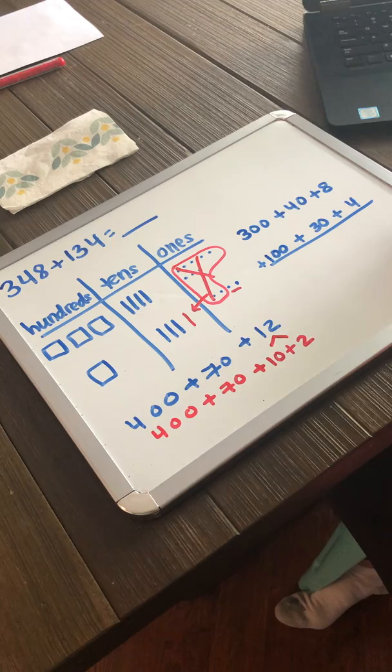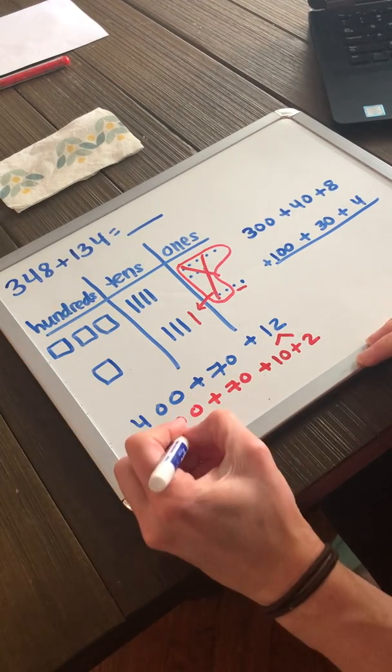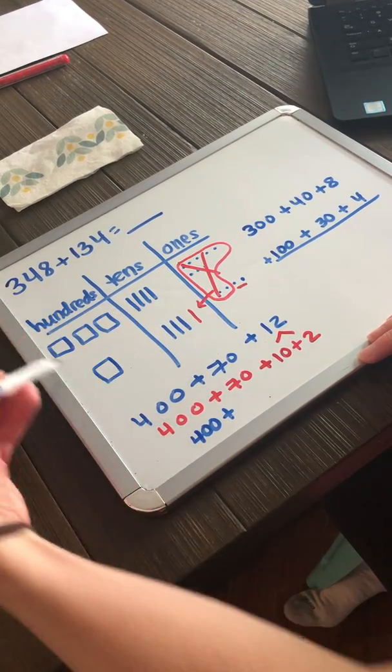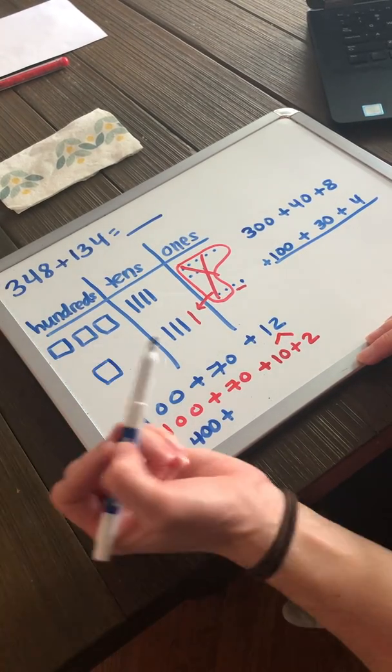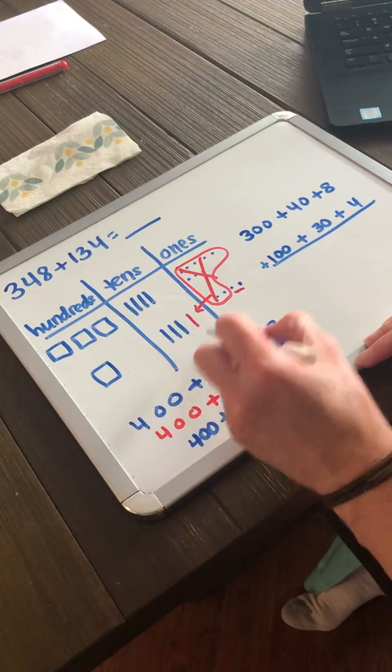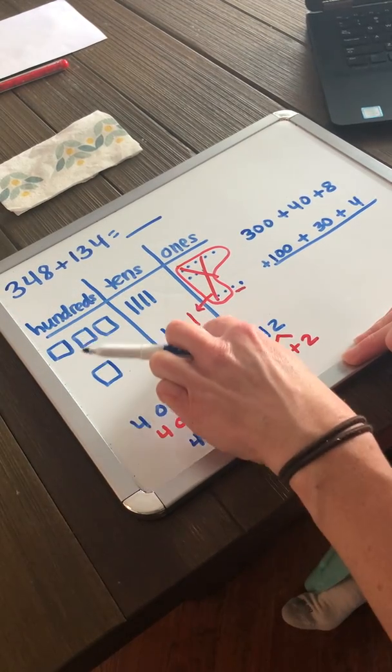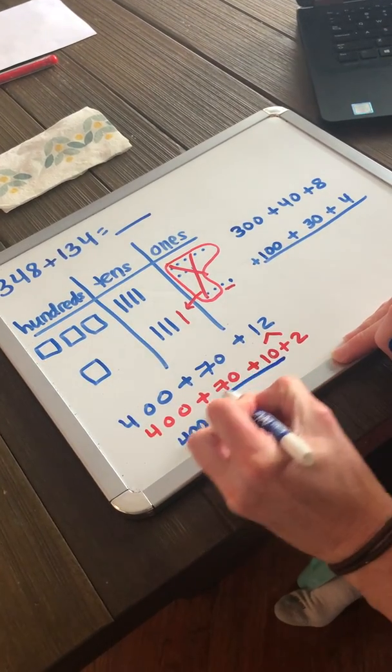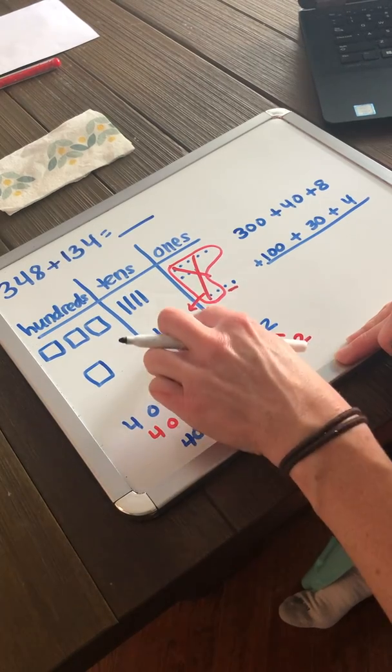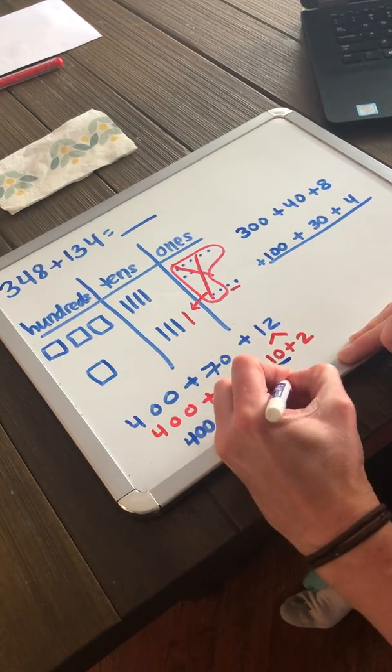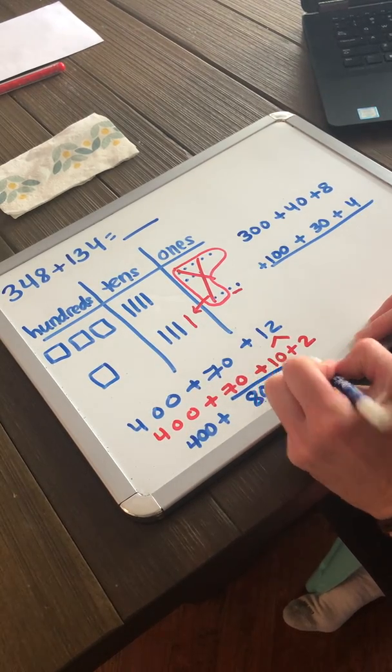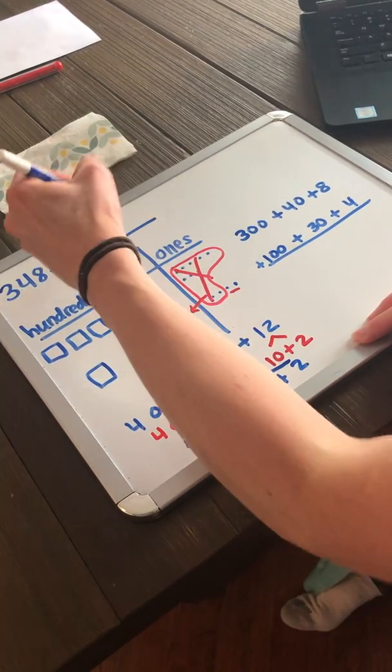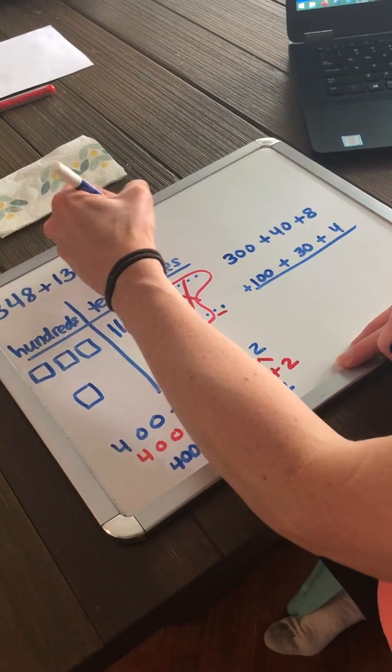So now let's combine our like values. 400 stayed the same. I didn't have any new combination there. We didn't exchange or regroup to get new 100s. But I don't have 7 10s anymore. I now have 8 10s. So I've got to add my 70 plus my extra 10, which is 80. And I now no longer have 12 1s. I have 2 1s. So my sum is 482.